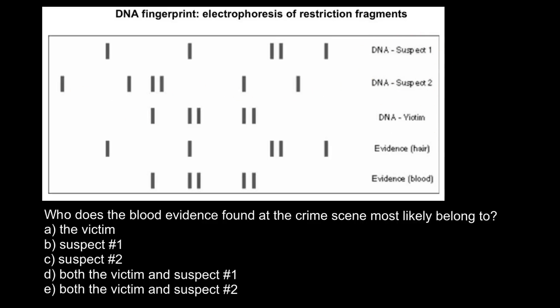Here is suspect number one, suspect number two, and the victim with their DNA fingerprints. The problem is: who does the blood evidence found at the crime scene most likely belong to? Here are five answers to choose from. If you need time, I recommend you pause the video here and try to solve this problem on your own first.